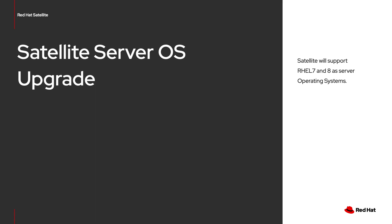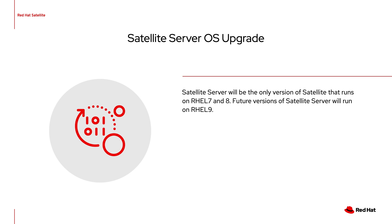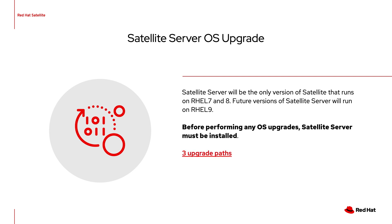We've added some help to get your Satellite server operating system upgraded from RHEL 7 to RHEL 8. Satellite 6.11 will support both RHEL 7 and RHEL 8, giving users greater flexibility in upgrading. We'll have three upgrade paths: the new deployment path, the backup restore path (also known as cloning), and the final and preferred method, Leap, which is an in-place upgrade operation.